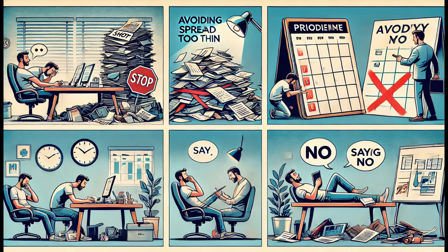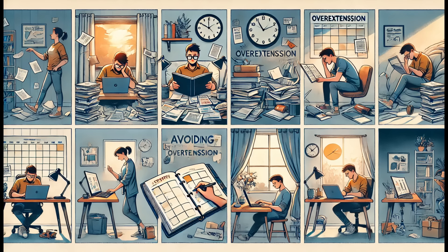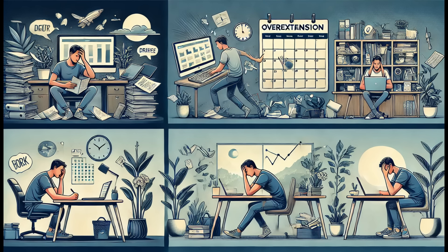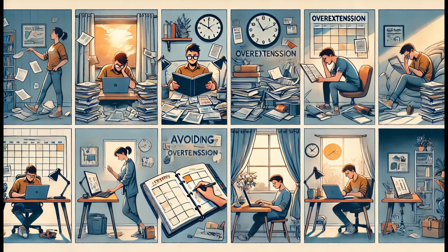What to avoid. Overextension: avoid spreading yourself too thin. Focus on maintaining a balance between ambitions and resources. Prioritize your commitments and learn to say no when necessary to avoid burnout and maintain quality in your endeavors. Manage your time and resources effectively to prevent over-committing and under-delivering.